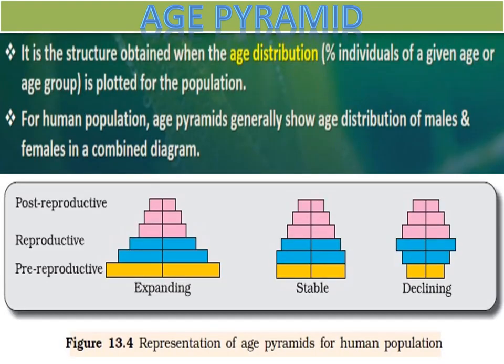Let's start with age pyramid. Age pyramid is an attribute of population. It is a structure obtained when age distribution is plotted for the population. Age distribution means the percent of individuals of a given age or age group — pre-reproductive, reproductive, or post-reproductive age group.